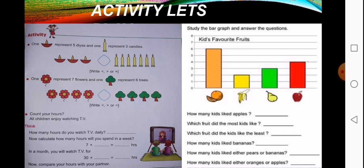See this activity. This activity represents: 1 diya represents 5 diyas, and 1 candle represents 3 candles. Which is greater? You have to mark it greater than or lesser than. So you have to do it.